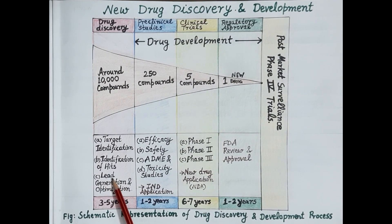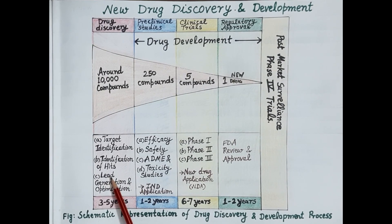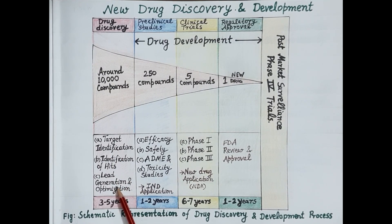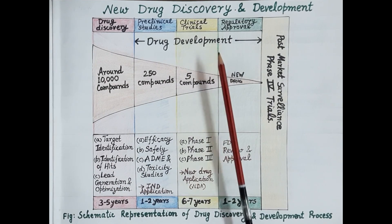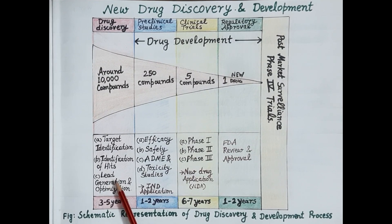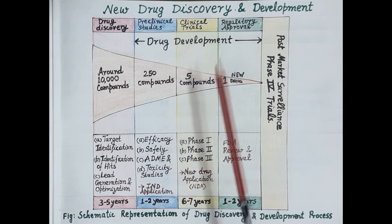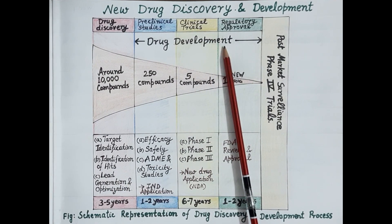Leads are potential drug candidates with high affinity and selectivity for the targets, and with optimal pharmacokinetic, pharmaceutical, and toxicological properties. During drug development, the compounds — the leads which were generated and optimized during the drug discovery process — are further screened in animals and human beings so as to finally identify a single most safe and effective drug molecule.